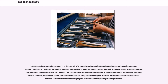Zooarchaeology, or archaeozoology, is the branch of archaeology that studies faunal remains related to ancient people. Faunal remains are the items left behind when an animal dies. These include bones, shells, hair, chitin, scales, hides, proteins, and DNA. Of these items, bones and shells occur most frequently at archaeological sites. Most of the time, most faunal remains do not survive.